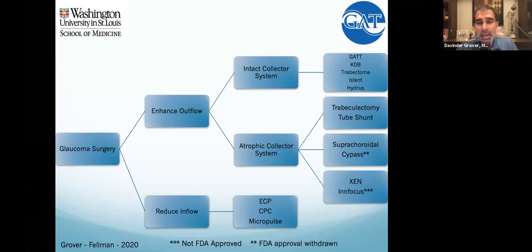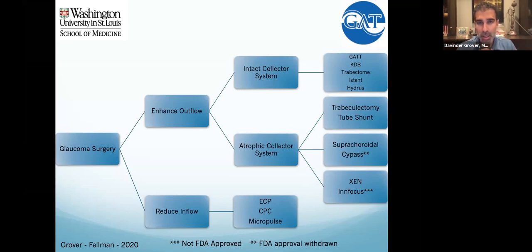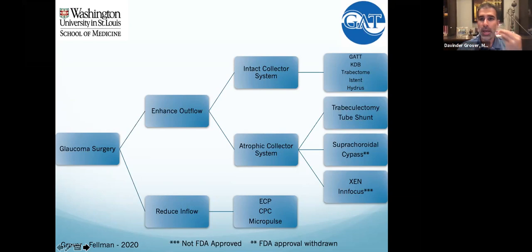A lot of our decision-making has been informed by TVT and TVTT. Our first goal is to open up the patient's own outflow system — make it as physiologic as possible through different angle procedures. If that doesn't work, or if we don't think it would work based on multiple prior surgeries or conjunctival scarring, then we go to the option of creating a new drain.